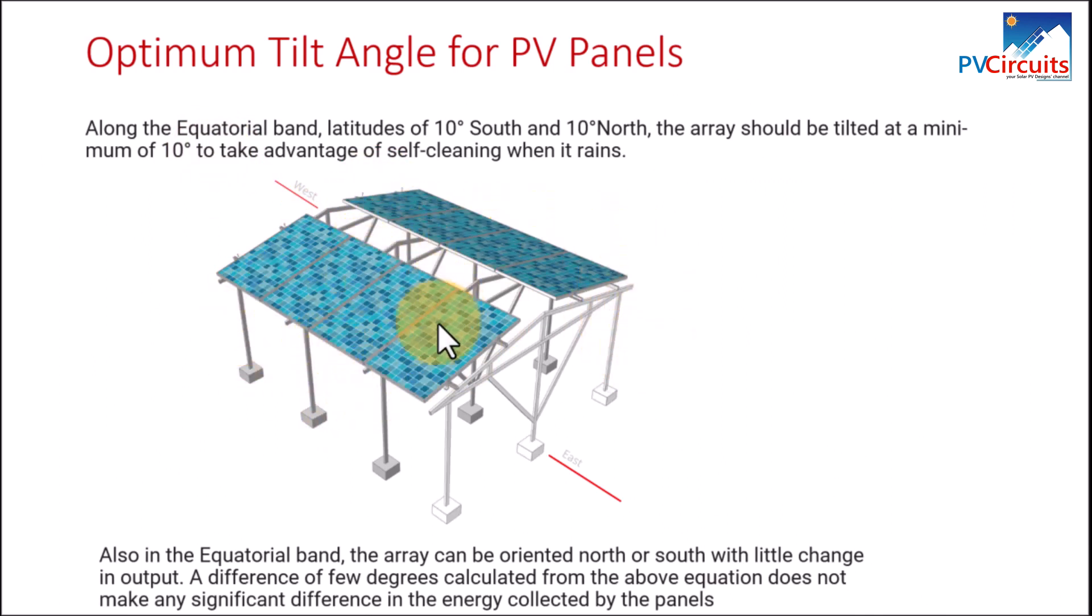Now this is just an example of a structure that can be used along this band. Because we've said that in the equatorial band the array can also be oriented north-south with a little change in the output, meaning that the modules can either face the south or face the north, or you can have some facing north some facing south as per this structure, with very little change in the output of the modules. And we are saying a few degrees of the equation does not make any significant difference in the energy collected by the modules.